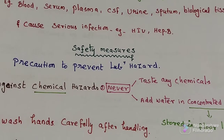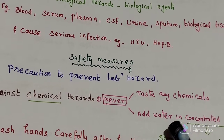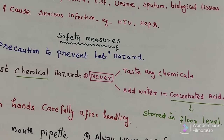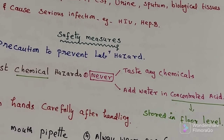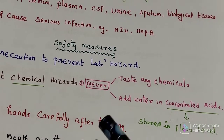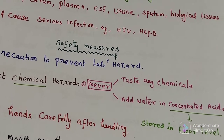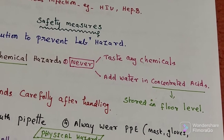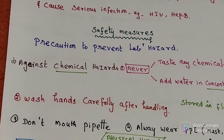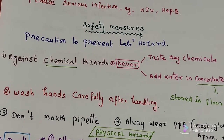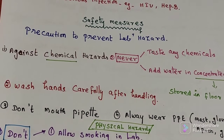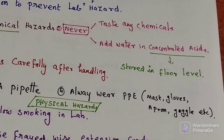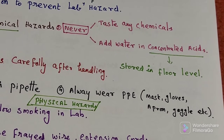Never taste any chemical in the laboratory. Never add water to concentrated acid. All concentrated chemicals must be stored at floor level. Wash hands carefully after handling hazardous chemicals. Don't pipette any chemicals by mouth. Always wear personal protective equipment while working in the laboratory, including face mask, gloves, lab apron, covered shoes, and goggles.